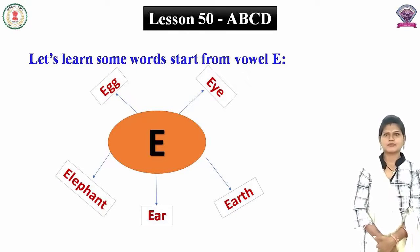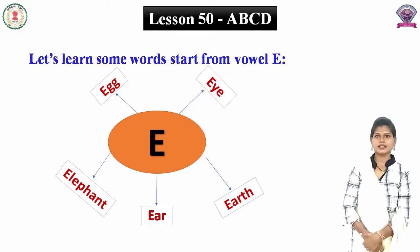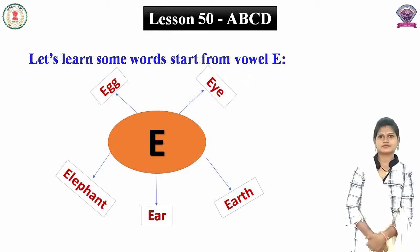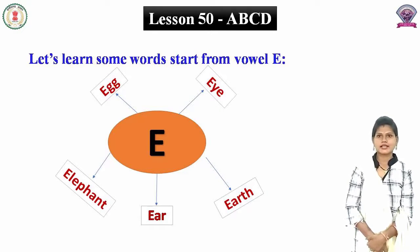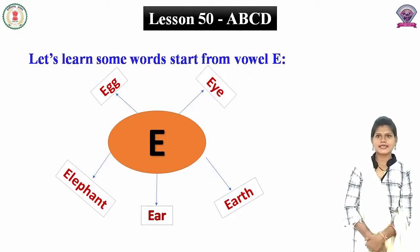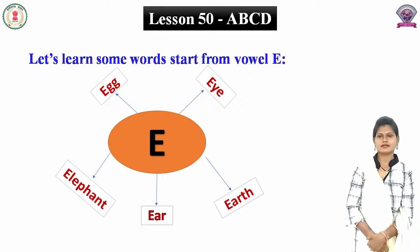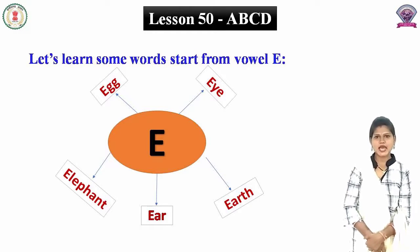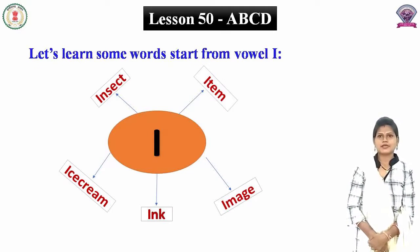Chaliye dekhte hain. Yahan par hum E se shuru hone wale kuch shabd dekhenge. E se egg. Egg means anda. E se eye. Eye means aankh. E se earth. Earth matlab prithvi. E se ear. Ear means kaan. E se elephant. Elephant means haathi.